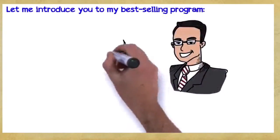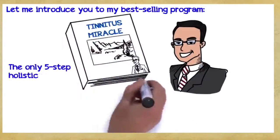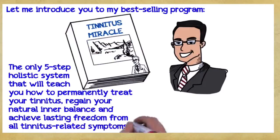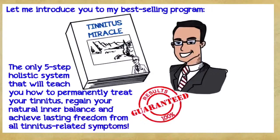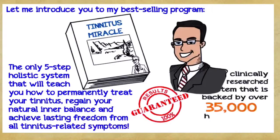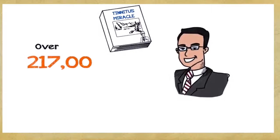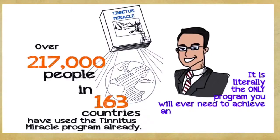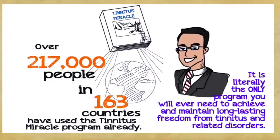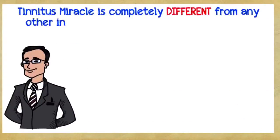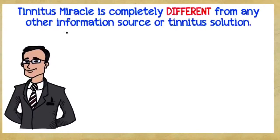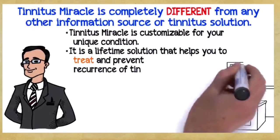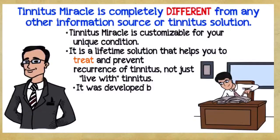Tinnitus Miracle. The only five-step holistic system that will teach you how to permanently treat your tinnitus, regain your natural inner balance, and achieve lasting freedom from all tinnitus-related symptoms. Tinnitus Miracle is a surefire, 100% guaranteed clinically researched system that is backed by over 35,000 hours of nutritional expertise. Over 217,000 people in 163 countries have used the Tinnitus Miracle program already. It's literally the only program you'll ever need to achieve and maintain long-lasting freedom from tinnitus and related disorders. Tinnitus Miracle is completely different from any other information source or tinnitus solution. Here's why: Tinnitus Miracle is customizable for your unique condition. It's a lifetime solution that helps you treat and prevent recurrence of tinnitus, not just live with tinnitus. It was developed by a real tinnitus sufferer.